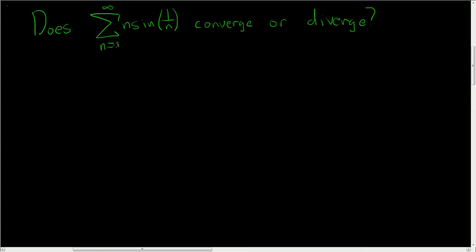Does the sum of n times the sine of 1 over n converge or diverge? So whenever we have a question like this where we're asked whether or not something converges or diverges, the first thing we should try is the nth term test.